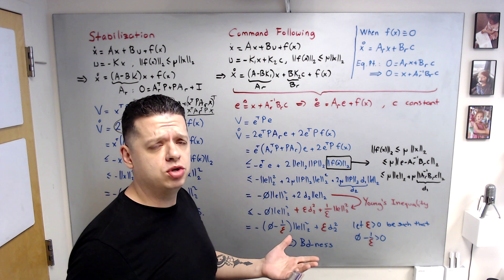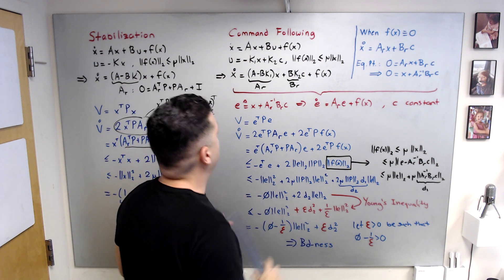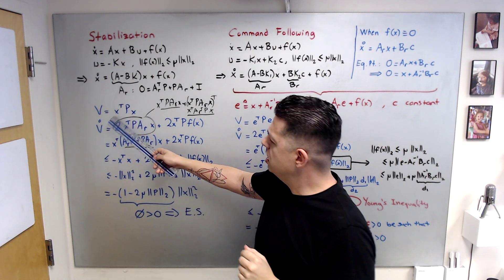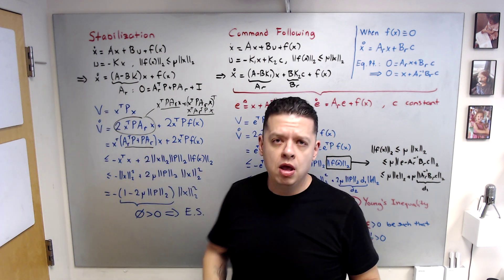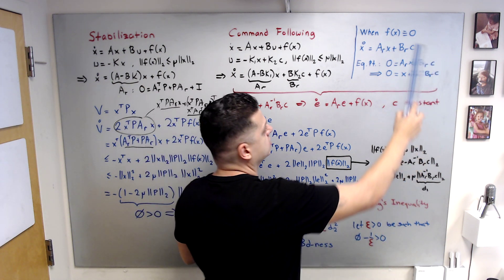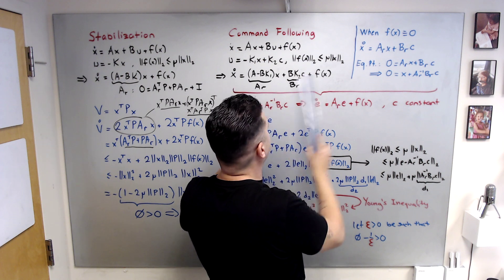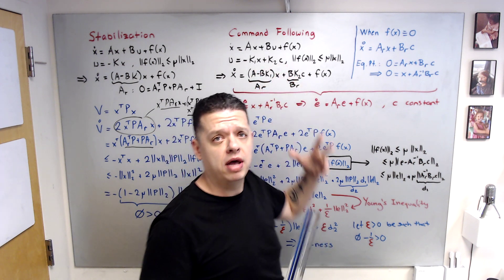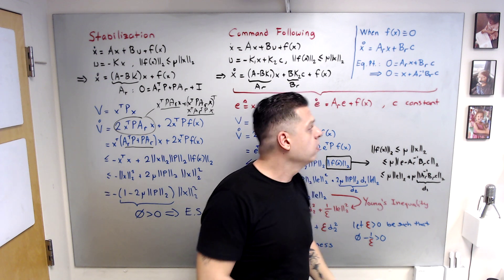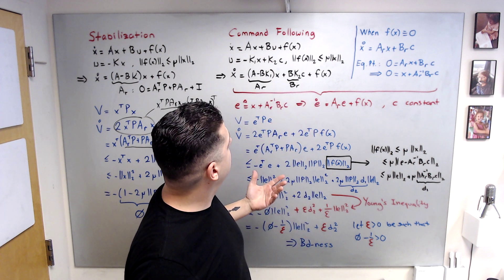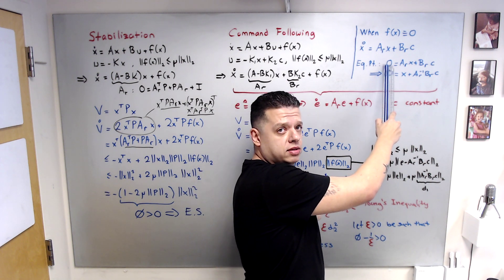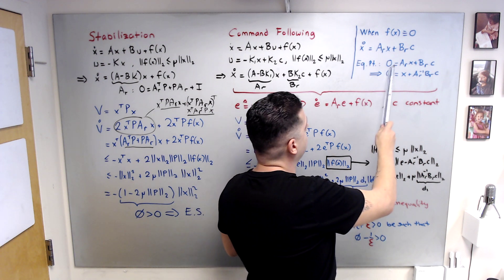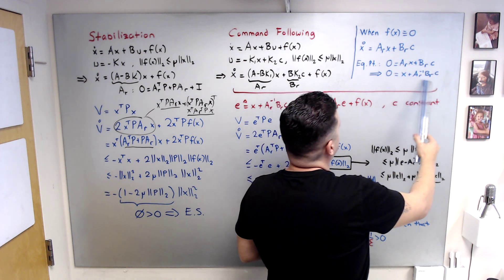I define an error signal because we want to drive x toward the command, not to zero. In the absence of f(x), x-dot = A_R x + B_R c. We designed K1 to make this Hurwitz and K2 so that some states approach the command. Since we are happy with this nominal closed-loop, we find its equilibrium point, which captures the ideal behavior without uncertainty.